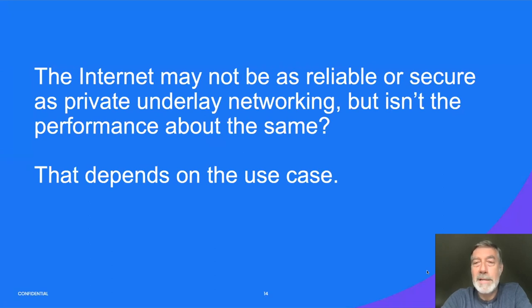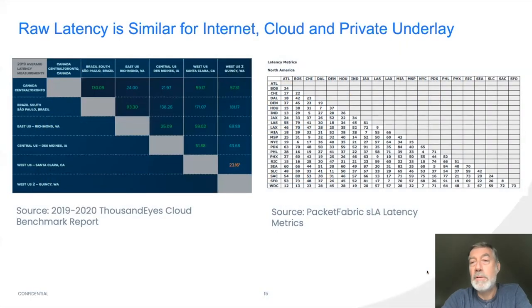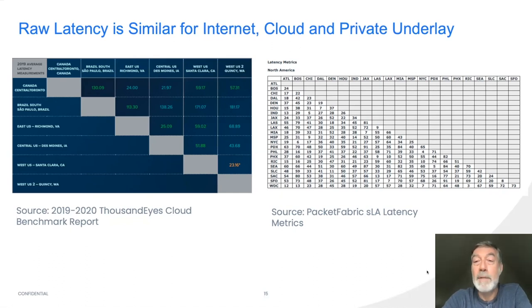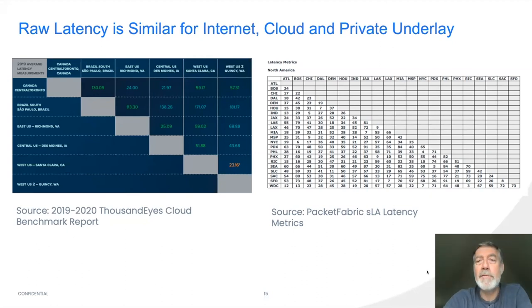When you look at it, the raw latency over the internet between any group of endpoints seems similar to that of a private underlay, and there's a reason for that: there are very few fiber routes in the world and we're all using the same fiber routes. On the left you see a ThousandEyes cloud benchmark between a bunch of different global endpoints, and on the right Packet Fabric's own SLA latency matrix between different endpoints on our network. They look the same — the speed of light in glass is the limitation for both types of deployments.